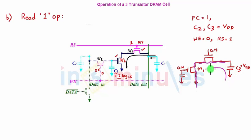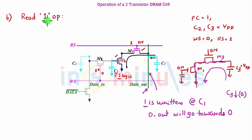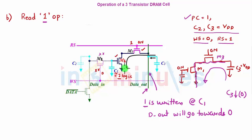C3 discharges through M3 and M1 and goes towards 0. If we probe the output here, we see that whenever a 1 is written at C1, the data out line falls towards 0. So if data out tends towards 0 or equals 0, that means a 1 is written at C1. We have written the 1 and now we have also read that 1. Simple steps: PC made 1, C2 and C3 charged to VDD, read signal set to 1, write signal set to 0, M2 off, M1 on because 1 was written, and C3 discharged through M3 and M1.